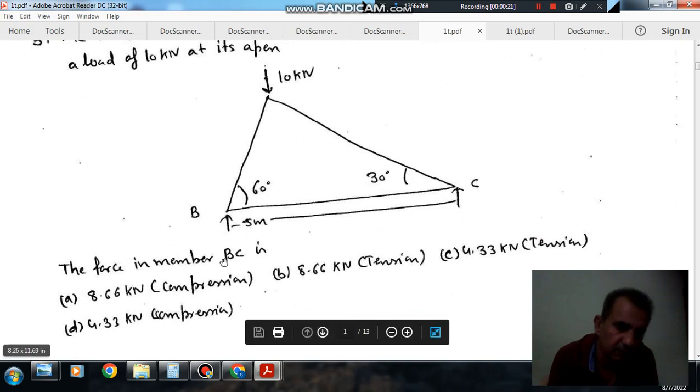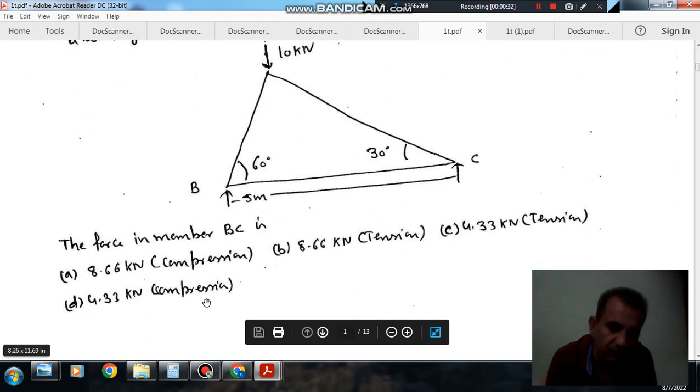The force in member BC: option A, 6 kN compression; option B, 8.66 kN; option C, 4.33 kN tension; and option D, 4.33 kN compression.